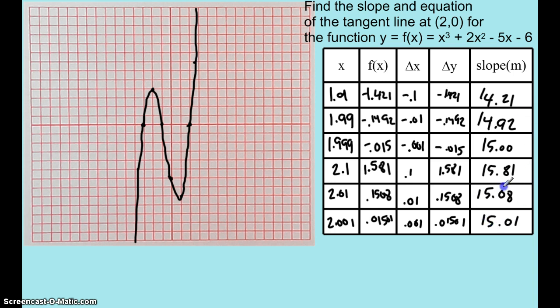What does the slope look like? It's approaching the closer and closer we get to 2 from the left or the right. It sure looks like the slope is going to be 15. So now the equation of that line that is tangent at (2,0) looks like it's going to be y minus 0 equals 15 times x minus 2. I'll go ahead and draw that tangent line in right now. And there's my best attempt at the tangent line there.